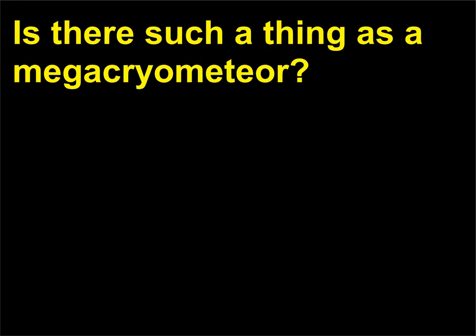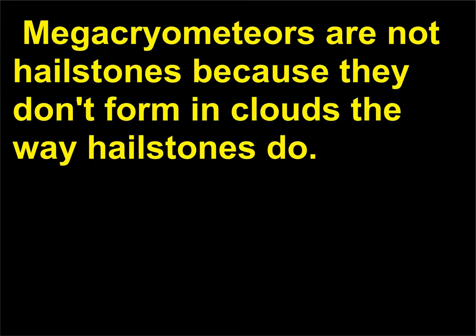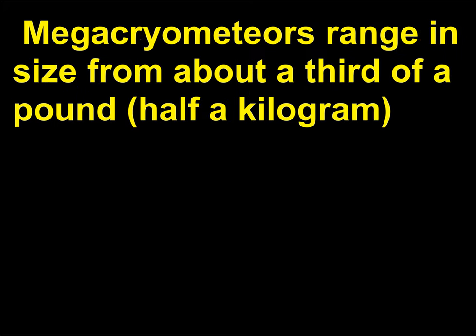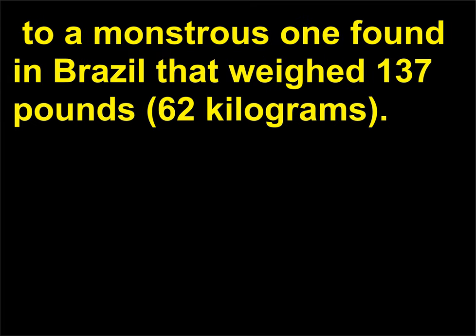Is there such a thing as a megacryometeor? Megacryometeors are not hailstones because they don't form in clouds the way hailstones do. They are giant ice stones that do not require thunderstorms in order to form. Megacryometeors range in size from about a third of a pound to a monstrous one found in Brazil that weighed 137 pounds (62 kilograms).